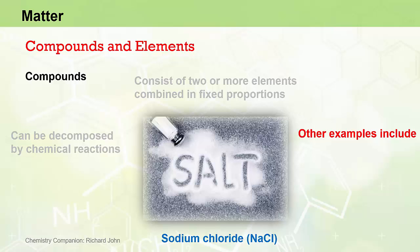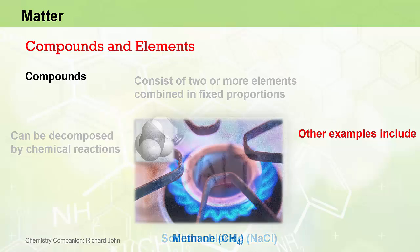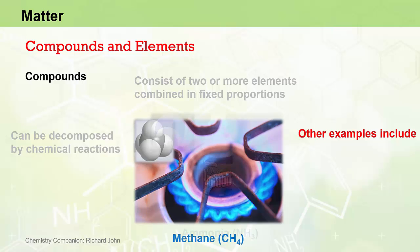Other examples of compounds include sodium chloride, NaCl, which is table salt, and it consists of the elements sodium and chlorine in a one to one ratio. Methane, CH4, which is the main component of natural gas, consists of the elements of carbon and hydrogen in a one to four ratio.